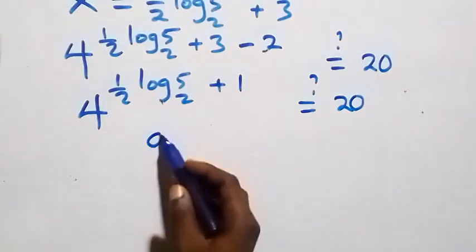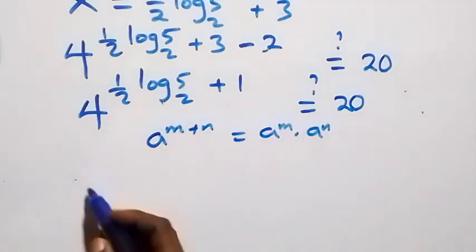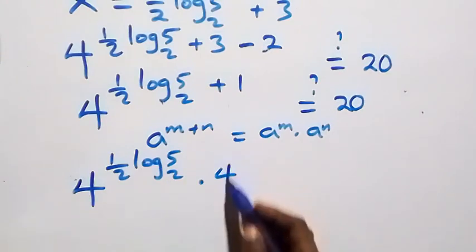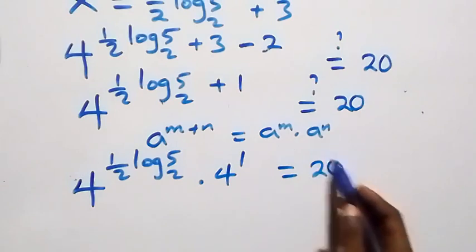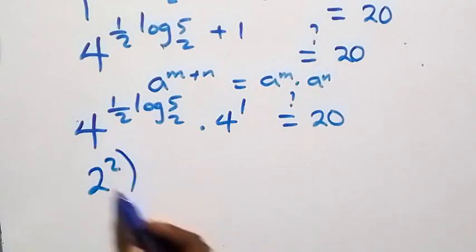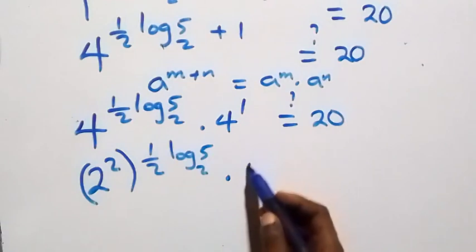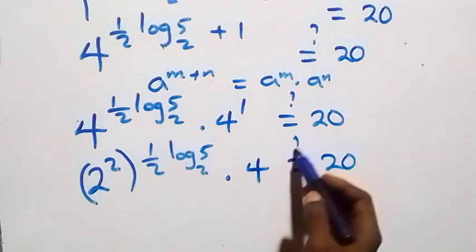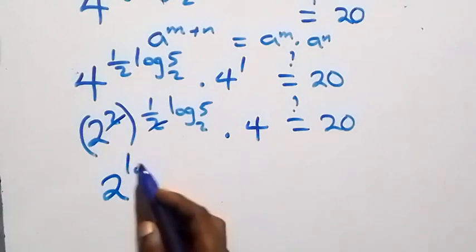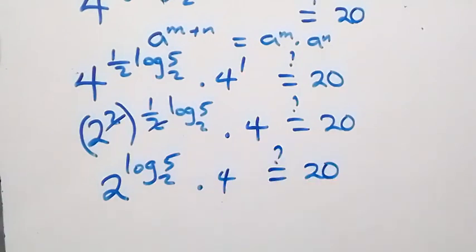Applying the index law — a raised to power m plus n equals a raised to power m times a raised to power n — this becomes 4 raised to power one half log base 2 of 5, times 4 raised to power 1, equals 20. The half power interacts with the base 4, and since 4 equals 2 squared, the 2's cancel, leaving 2 raised to power log base 2 of 5, times 4.